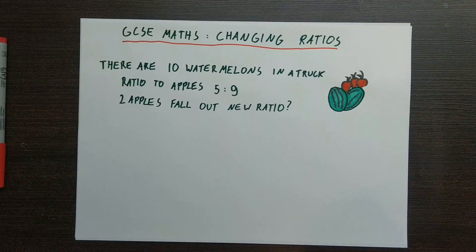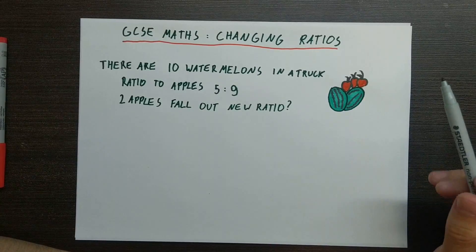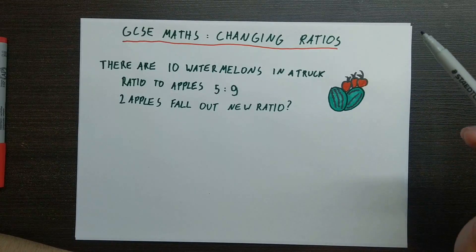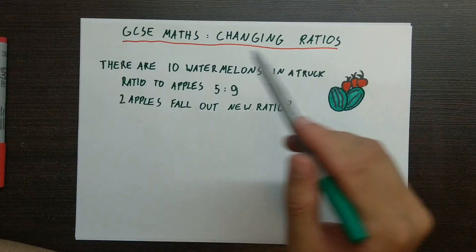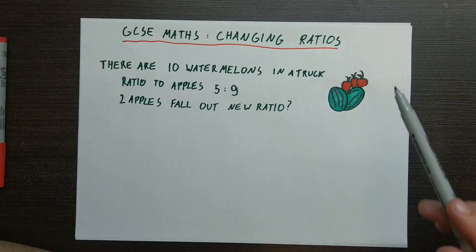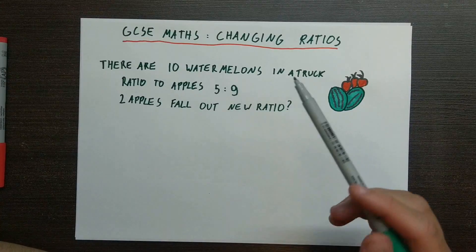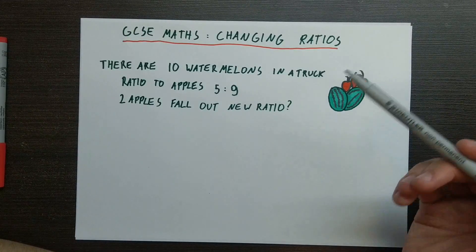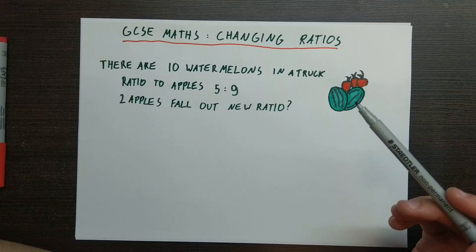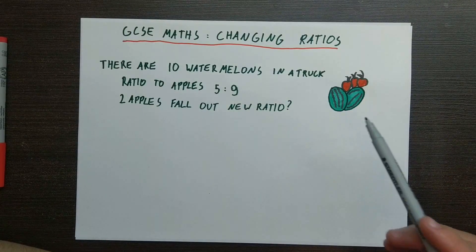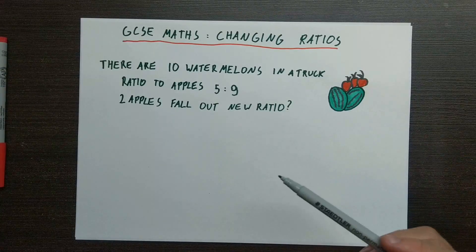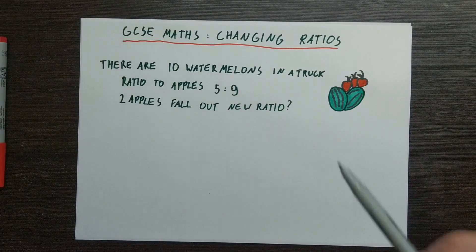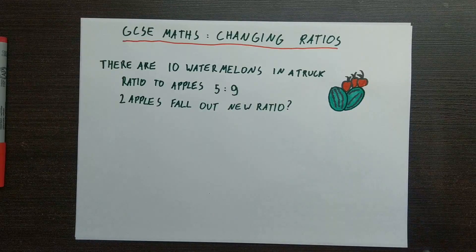Hello everyone, my name is Hubert and welcome to TeachMe channel. Today we will be looking at GCSE Maths changing ratios. This is the final video on GCSE Maths ratios that I'll be doing, so hopefully after this video I have covered everything. There are two things we need to cover: how to deal with changing ratios and how to calculate them. The best way to approach this is by doing questions and examples. We have one simple example and then one more complex example. Without further ado, let's get started.